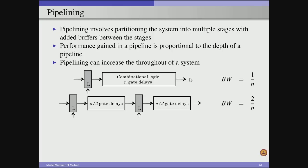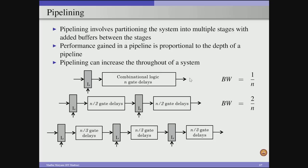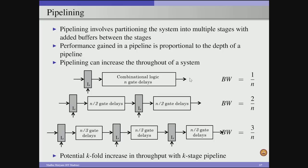Continuing this logic, if we divide the combinational logic into three parts with three stages, each separated by a latch, each sub-stage takes n/3 gate delays and the bandwidth becomes 3/n. In other words, if I divide my combinational logic into k stages, I can get a bandwidth of k/n — the bandwidth is improved by k times. A potential k-fold increase in throughput is obtained with a k-stage pipeline.